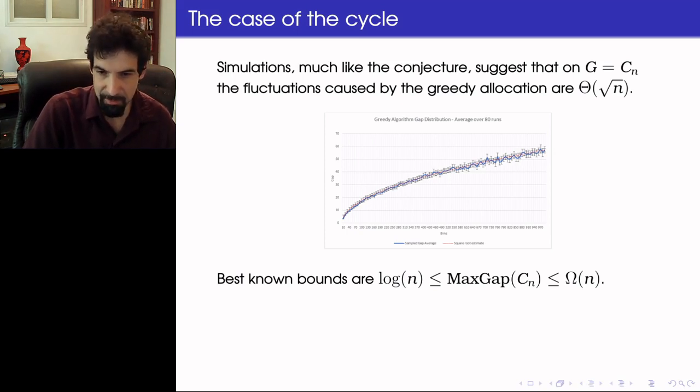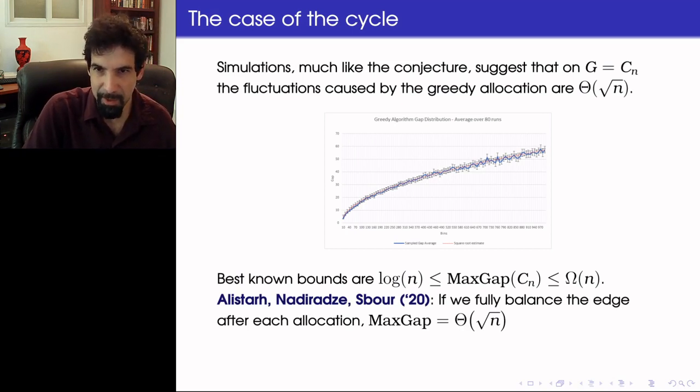Now the best known bounds are not so good. So the lower bound is log N and the upper bound is N. So we virtually know almost nothing about the maximum gap on a cycle.